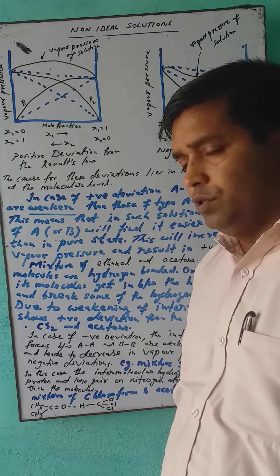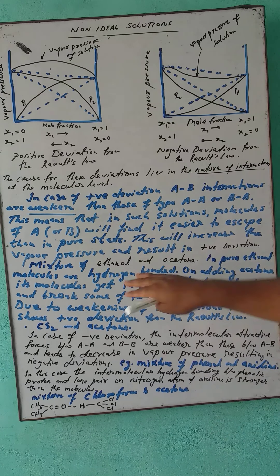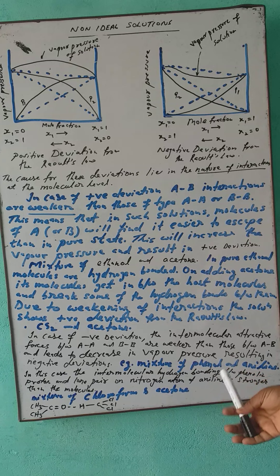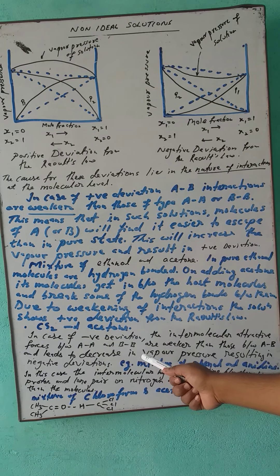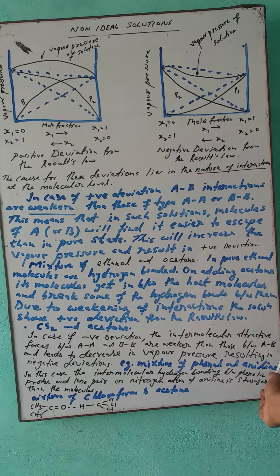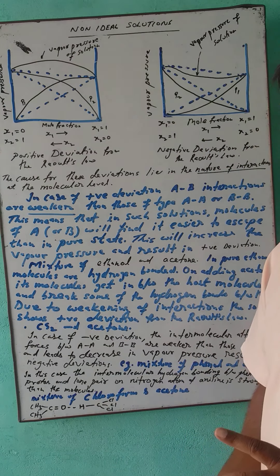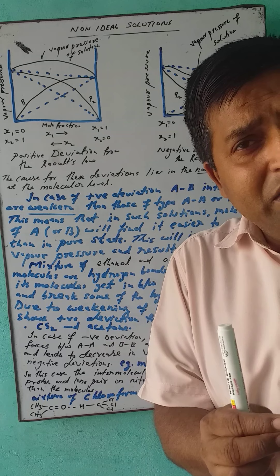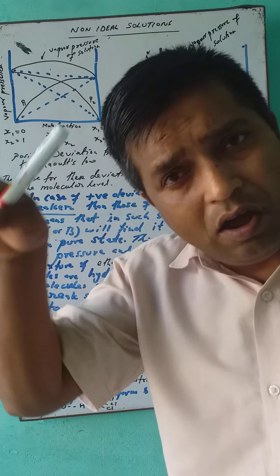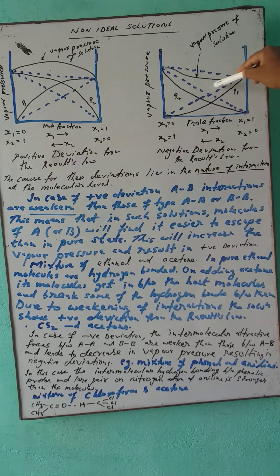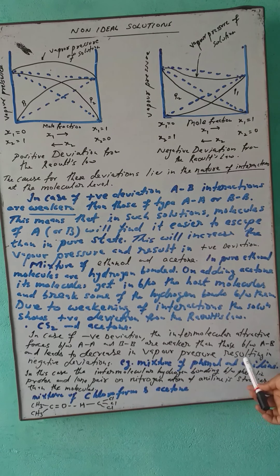For negative deviations, the intermolecular attractive forces between A-type and B-type are stronger than those between A-A and B-B. The A-B type interaction is more dominant, so fewer vapors escape and vapor pressure decreases, resulting in a downward curve and negative deviation.